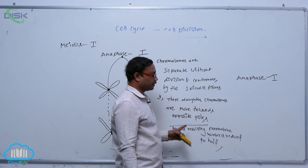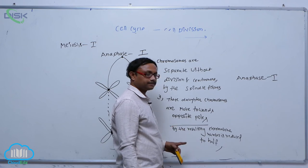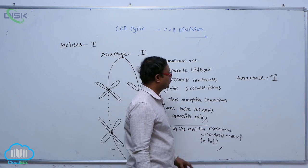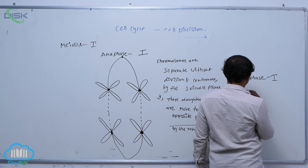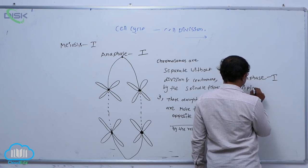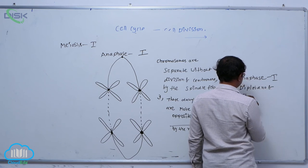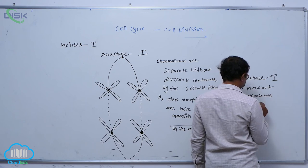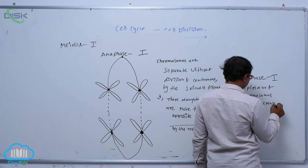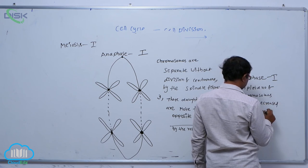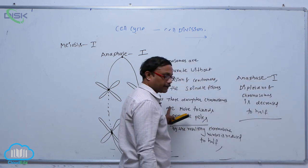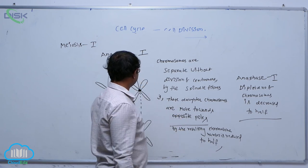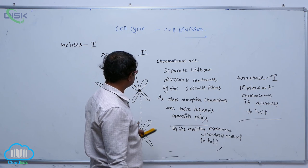separated by the spindle fibers and they are moved towards opposite poles. By the resulting process, chromosome number is reduced to half in Anaphase I. The diploid number of chromosomes is decreased to half. This is an important point about meiosis — Anaphase I is an important sub-phase in meiosis.